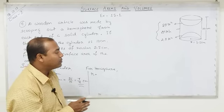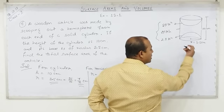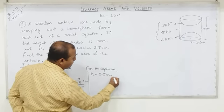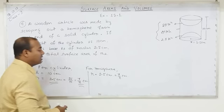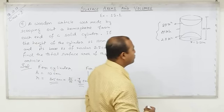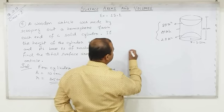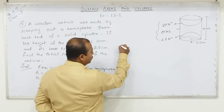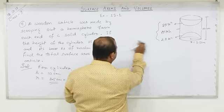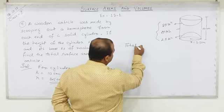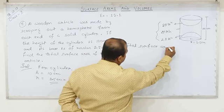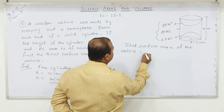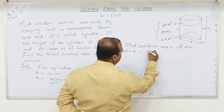The radius of the cylinder is the same as the radius of the hemisphere, so radius = 3.5 cm or 7/2 cm. Since hemisphere has no other dimensions, we use just this radius. Total surface area of the article = CSA of the cylinder + curved surface area of two hemispheres.